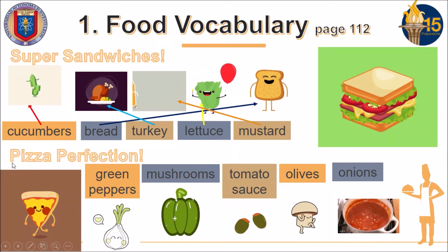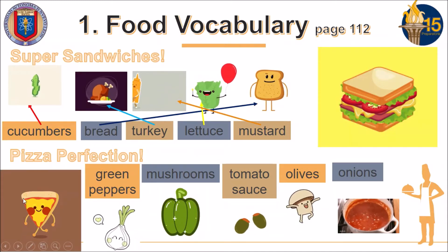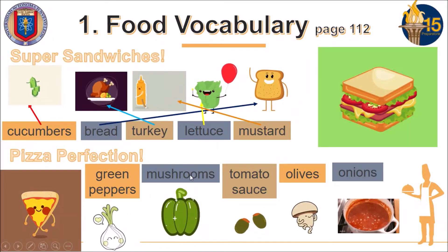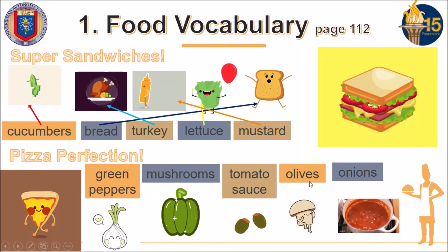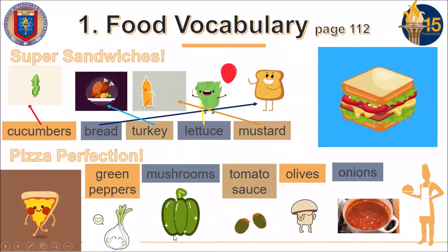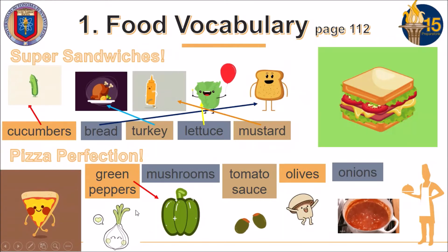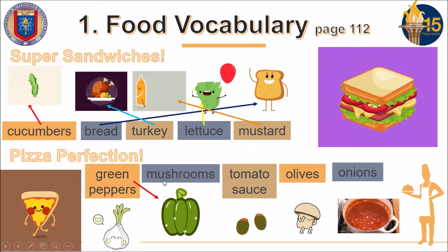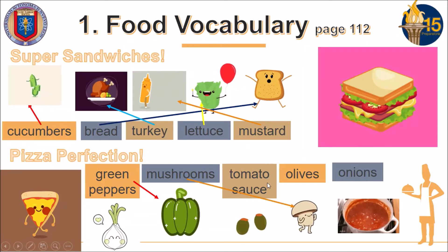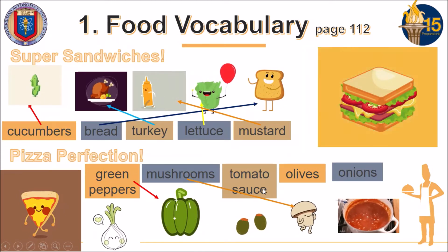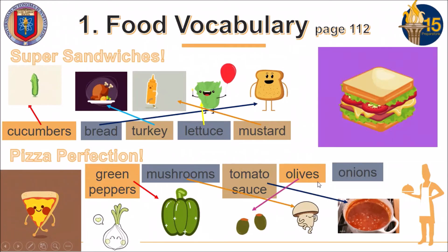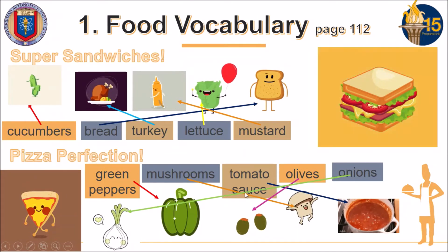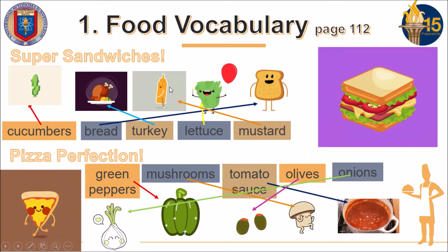Now in the next section, we are going to have pizza perfection. This is pizza and you need all these ingredients to cook it: green peppers — pimientos; mushrooms — champiñones; tomato sauce — salsa de tomate; olives — aceitunas; onions — cebolla. You need to remember this vocabulary when you are preparing a sandwich or a pizza so you can practice.